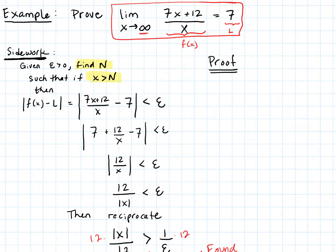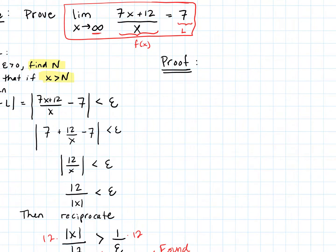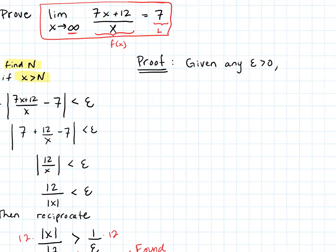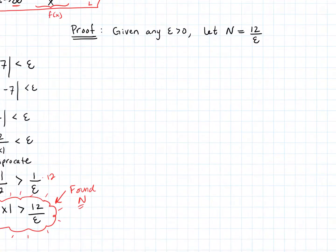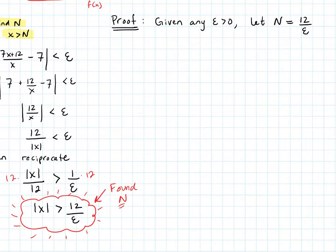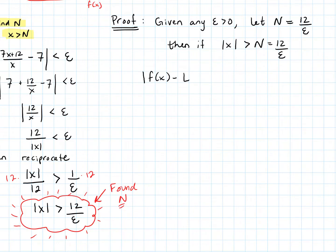Official proof. We start with the formal statement: given any epsilon greater than 0. This time we know what we want N to be, so we let N = 12/epsilon. Then: if x > N — that is, x > 12/epsilon — then consider |f(x) - L|, which is |(7x + 12)/x - 7|, where L = 7.